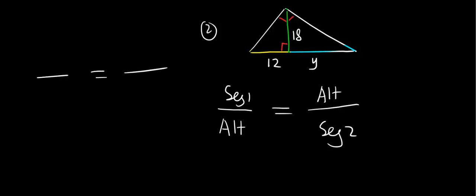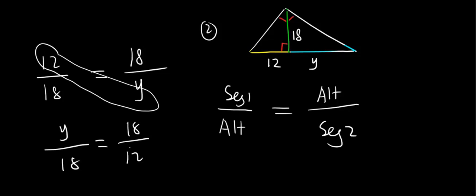We can start to write altitude. Altitude is 18, 18. You can put a 12 here, you can put a y here. You can also say 18 and 18, you can put a y here, you can put a 12 here. Because you can interchange the extreme. And also, because who is segment one? Who is segment two? Truly, you decide. Let's go ahead and solve for this.